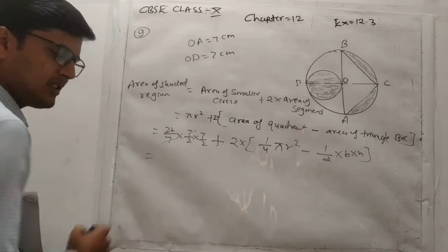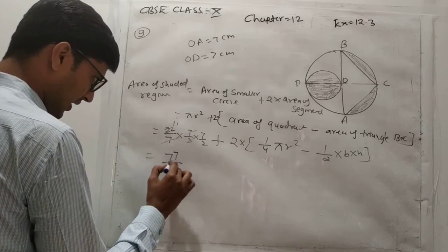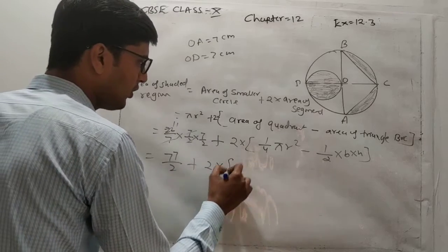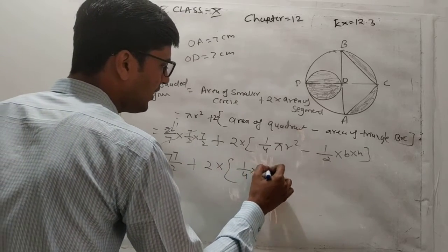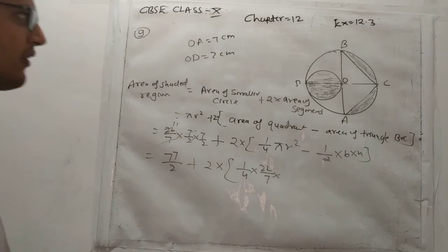So simply 7 se 7 cancel out, 2 se 11. So 11 se 7 upon 2, plus 2 into 1 upon 4 into 22 upon 7. For this, the radius will be 7, because this OB, OA, OC, OD are all radii.